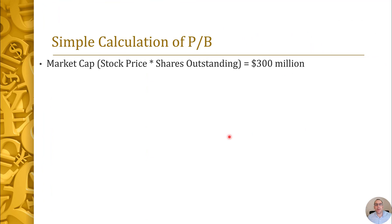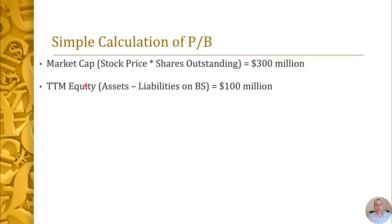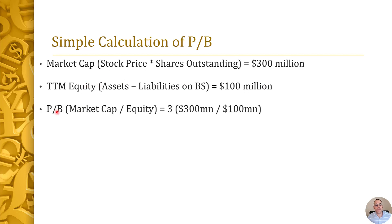Let me show you a simple calculation of price-to-book. First, you need the market cap — that's just stock price times shares outstanding. Say it's $300 million for this company. Then you need their equity for the trailing 12 months, which you can find on the balance sheet — it's assets minus liabilities. Say that's $100 million. So the price-to-book for this company is 3: $300 million over $100 million, market cap over equity. So if you invested in this company, you'd be paying $3 for $1 of book value.